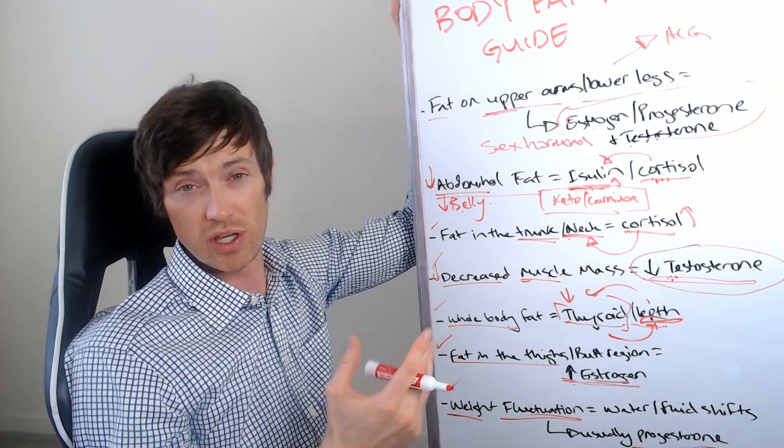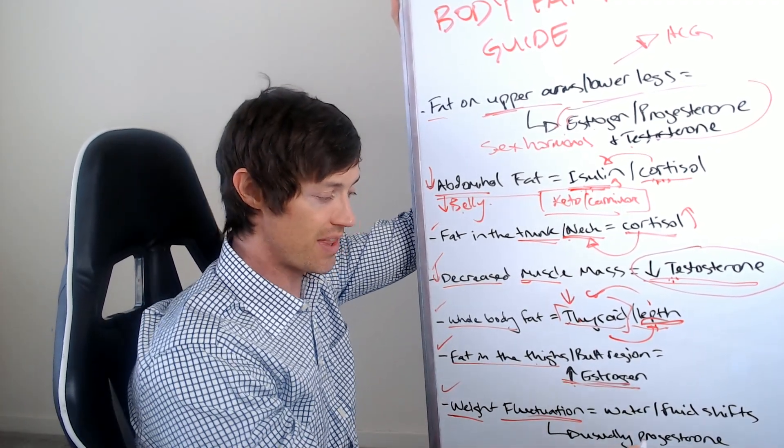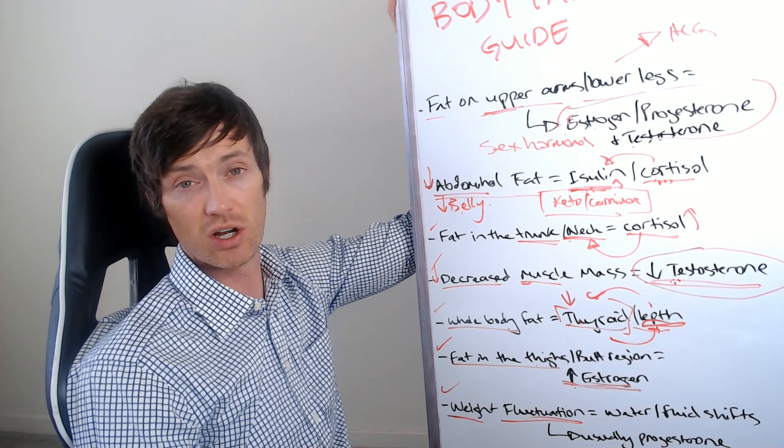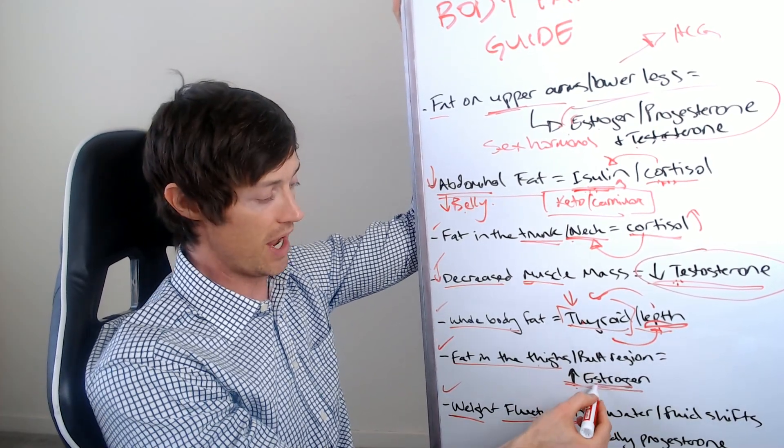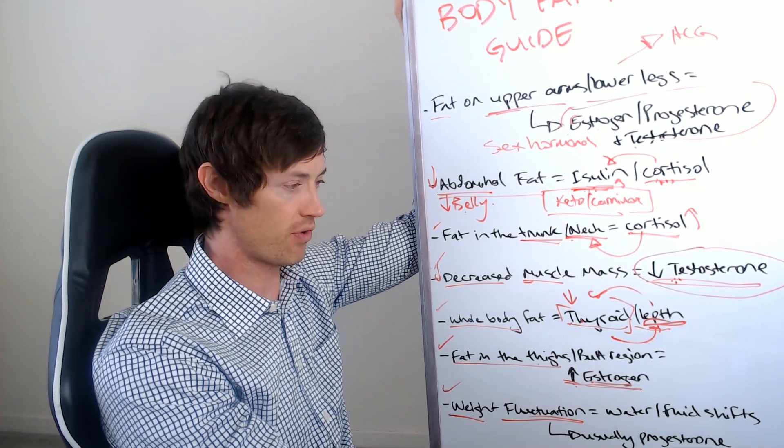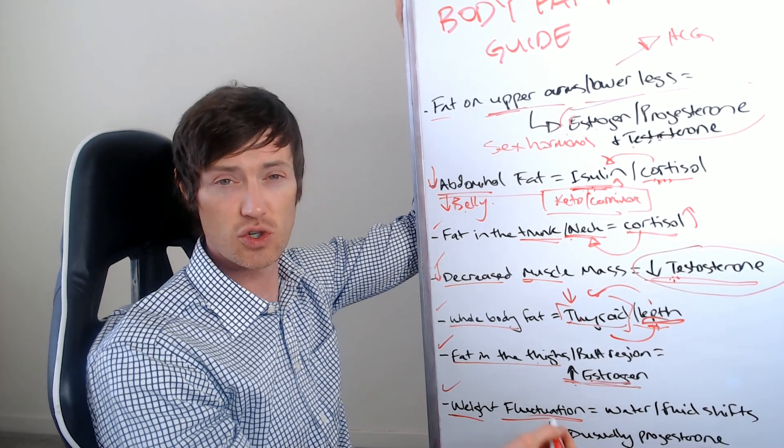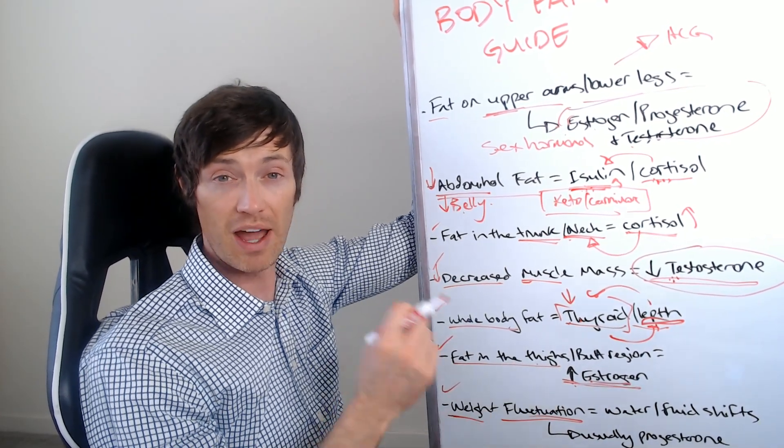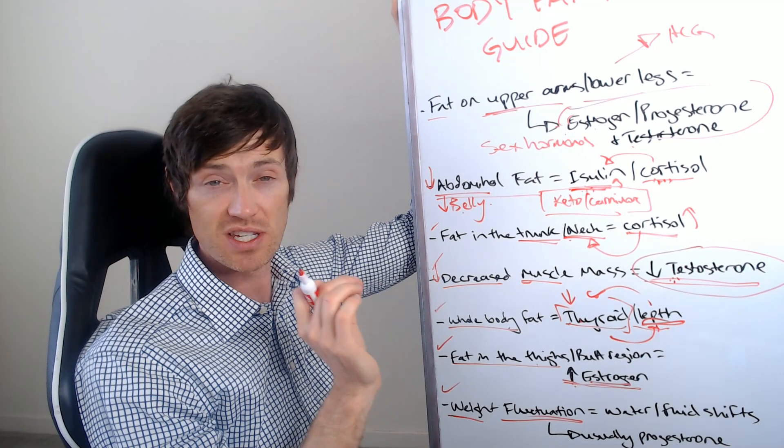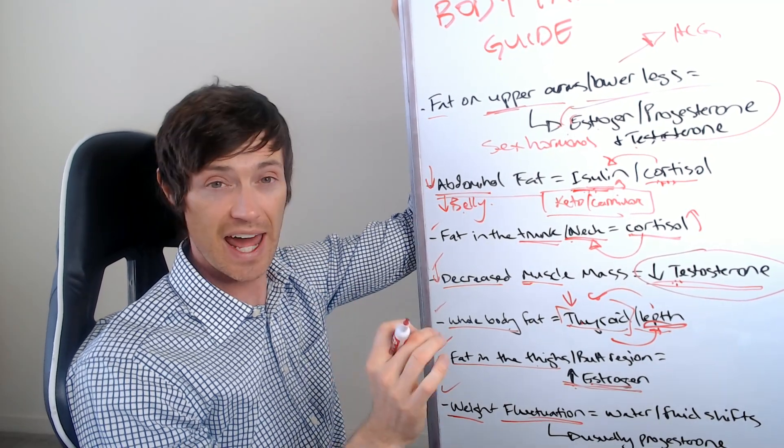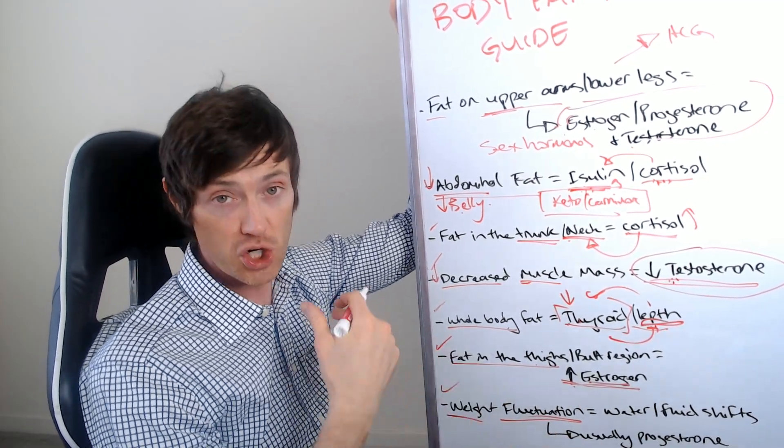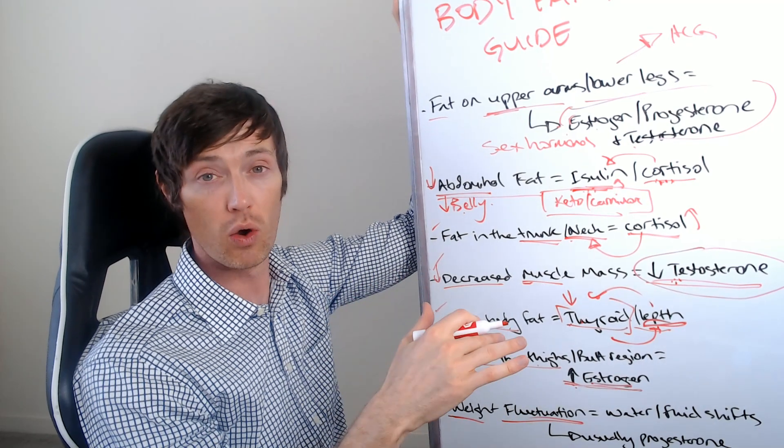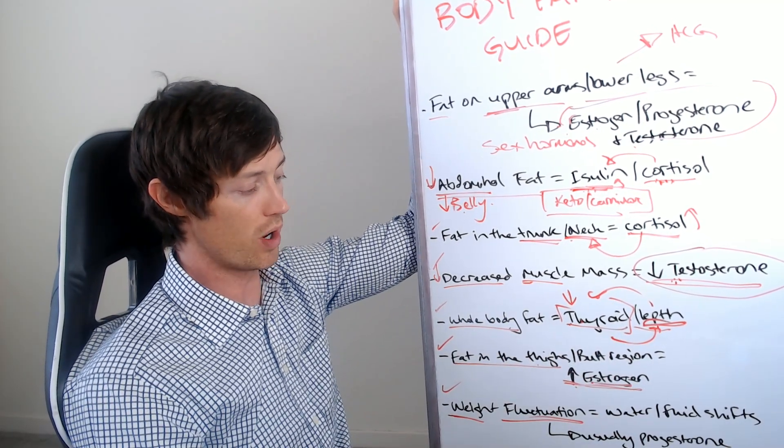So usually high progesterone, progesterone for whatever reason seems to cause changes in fluid and changes in water shifts. So you can quickly and rapidly gain weight and lose weight, depending on how progesterone impacts how much fluid you're carrying at any given time. And if you get rid of it, you can pee it out and that's why you can lose a lot of weight. And it also seems to be that progesterone does seem to have some impact on fat mass, right? Same way that estrogen does, but it's a little bit different.